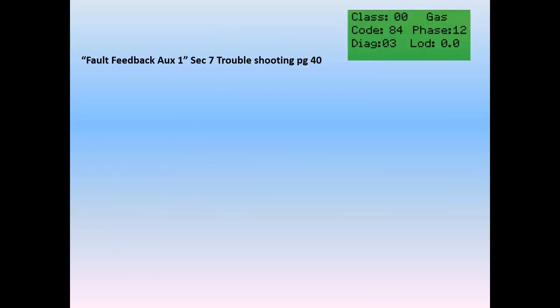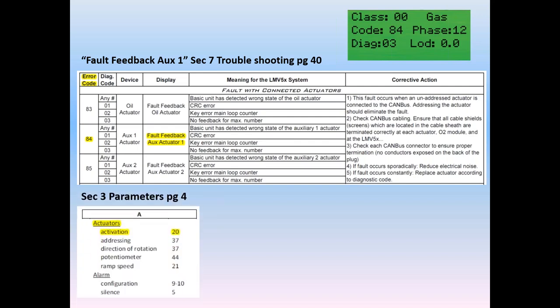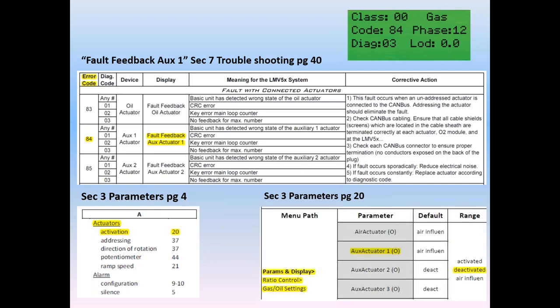Let's take another example of another fault: fault feedback AUX1. If we go to section troubleshooting on page 40, we will see in fact a code 84 — it is a fault feedback on the auxiliary one actuator. Since we don't know exactly where in the menu to go on this, the first two pages of the parameter section give you the detail of all 300 parameters on the LNV. If you're not sure about exactly which parameters are involved, go to the next page and there's a subjective listing by topic. In this case, we'll go to actuators and we see that the activation is on page 20. When we go to page 20, we see we can navigate to parameter display, ratio control, gas settings, go to the auxiliary, and activate or deactivate that auxiliary actuator.